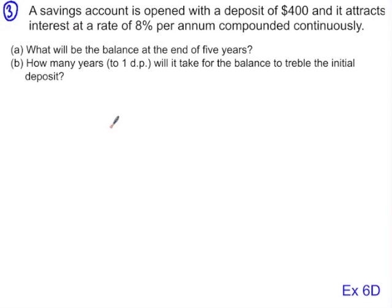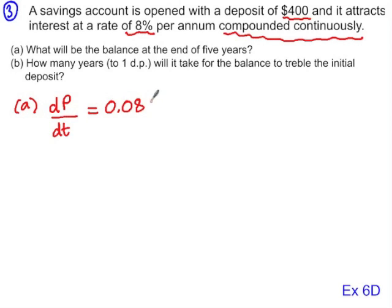Finally, we have a compound interest example. So we've got a savings account opened with a deposit of $400, interest rate 8%, and it is compounded continuously. So there's the clue that we're dealing with an exponential function. So firstly, what will the balance be at the end of five years? We know that the principal grows at a rate of 0.08 per annum, and when we anti-differentiate P with respect to t, our initial amount is $400, e to the 0.08, and after five years, we can substitute in that value.